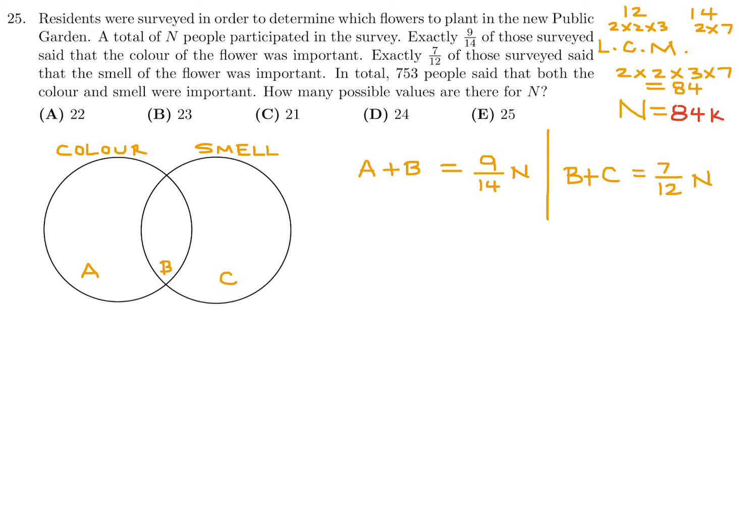let's plug in that value of n, 9 over 14 times 84K. And when you do, you get 54K for a plus b. And when you do the same thing over here, you get b plus c is equal to 7 over 12n, which is 84K. And that gives you 49K for b plus c.